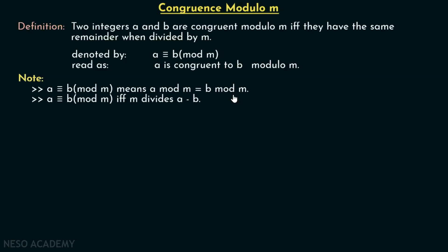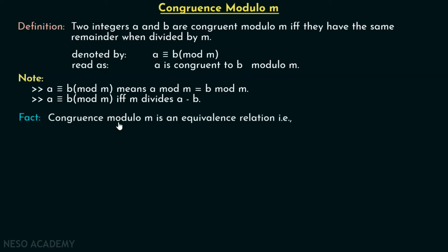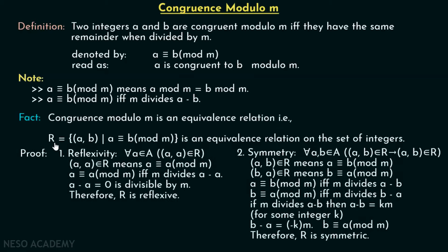Apart from this, there is one more thing: A is congruent to B modulo M if and only if M divides A minus B. This is also true. Now, here is one fact: congruence modulo M is an equivalence relation. That is, R, which is the set of all ordered pairs (A, B) such that A is congruent to B modulo M, is an equivalence relation on the set of integers.